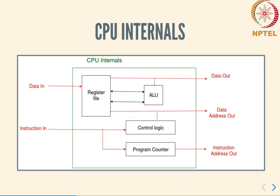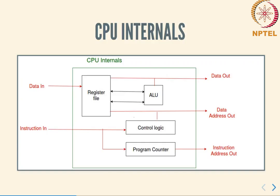In practice, most processors have many variations on this — pipelining is used for higher performance, shadow registers and switchable register files are used for fast context switching, and various other modifications are generally designed into CPUs. However, these are not our concern and we are not going to go any deeper into that at the moment.